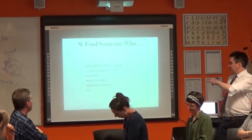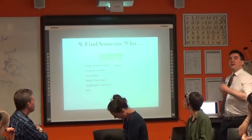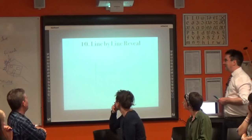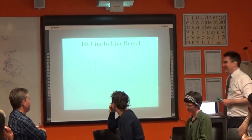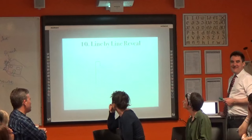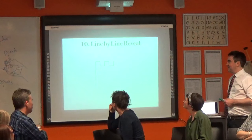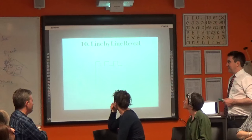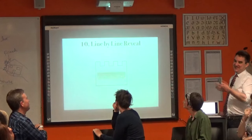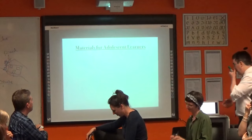Find someone who is scared of, likes, doesn't like, would like — the topic is fears. And the last one: line by line reveal — revealing a picture gradually. House, castle — there you go. So there are ten ideas you could use to introduce your lessons with young learners or adults.